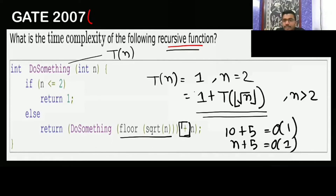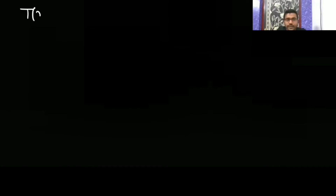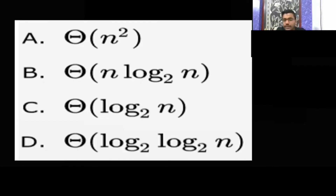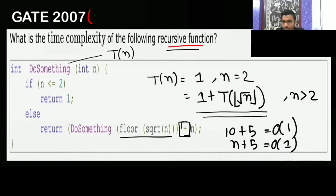So now the time complexity equation is T(n) = T(root n) + 1. This is not in the standard Master Theorem form, so we assume n = 2^m. Then T(2^m) = T(2^(m/2)) + 1, because the square root of 2^m is 2^(m/2). Also, m = log n base 2.